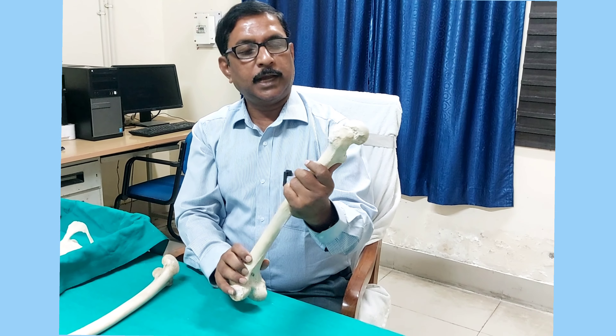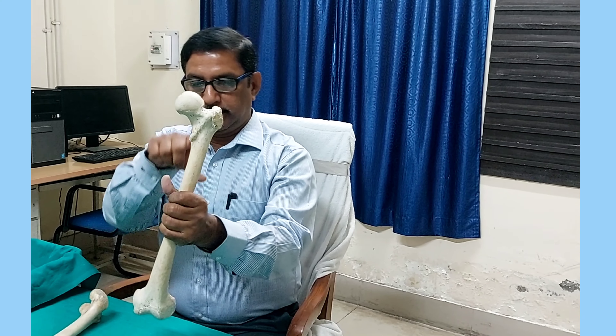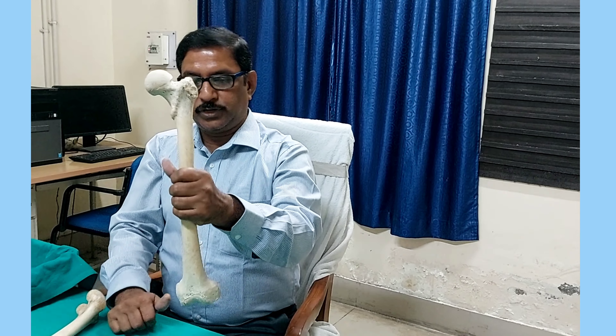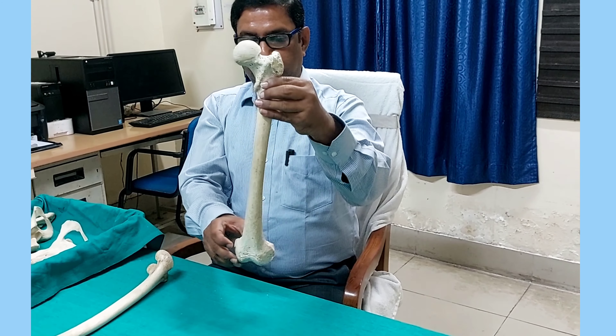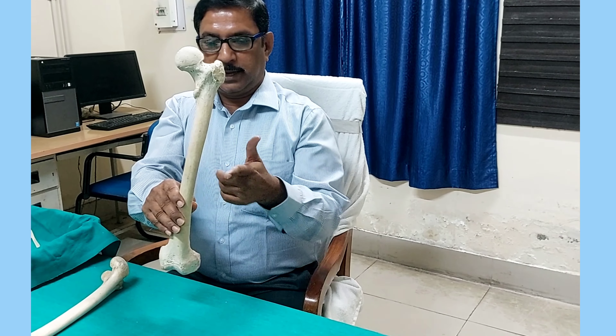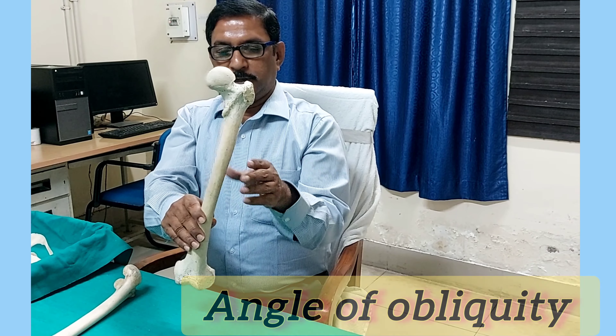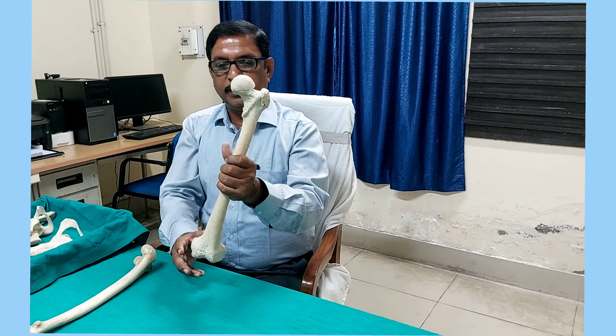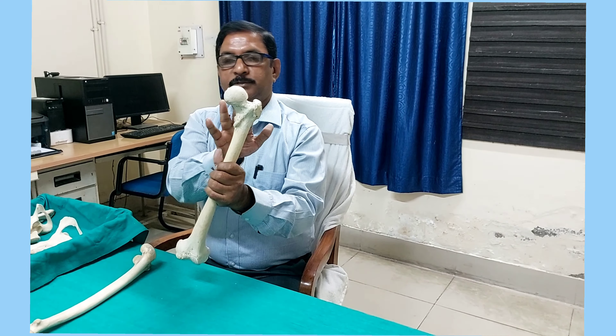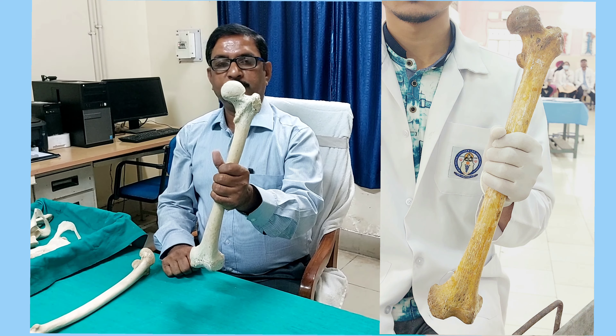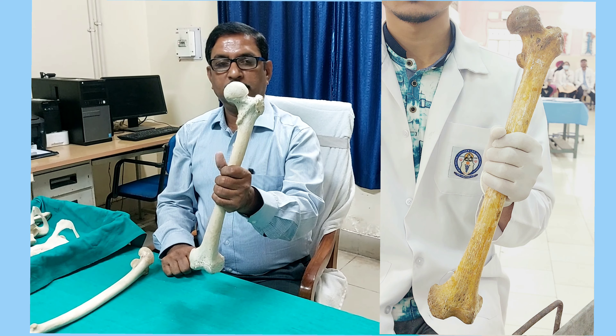Now hold the bone in anatomical position. Pick it up and hold it so the lower end faces downwards and medially — not straight, but obliquely. If this is the vertical line, the femur is placed obliquely, forming an angle called the angle of obliquity. The lower end is medial and the upper end is somewhat lateral. This is the femur of the left side. Similarly, this is the femur of the right side — upper end, shaft, lower end, head, neck, trochanters, and two condyles.